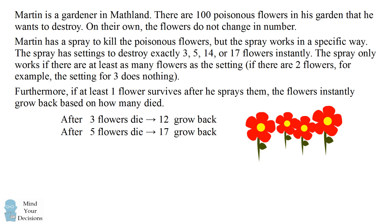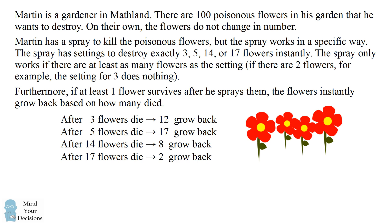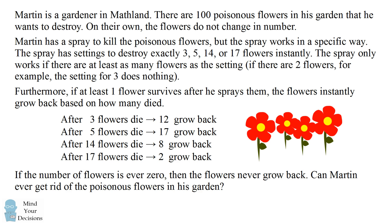If 5 die, then 17 grow back. If 14 die, then 8 grow back. And if 17 die, 2 grow back. If the number of flowers is ever exactly zero, then the flowers never grow back.